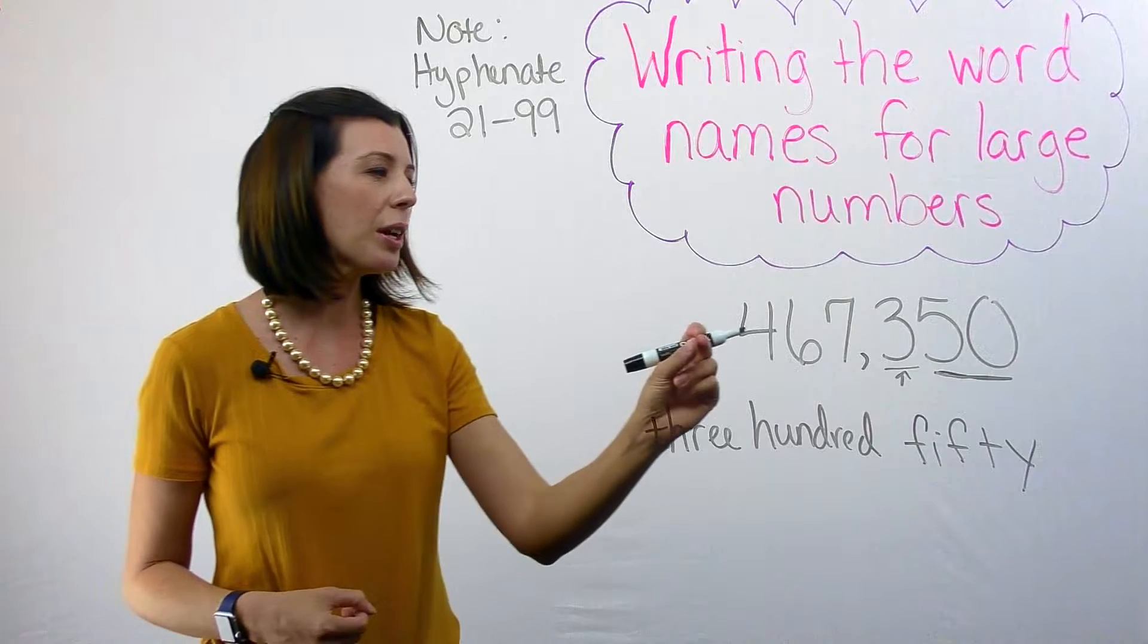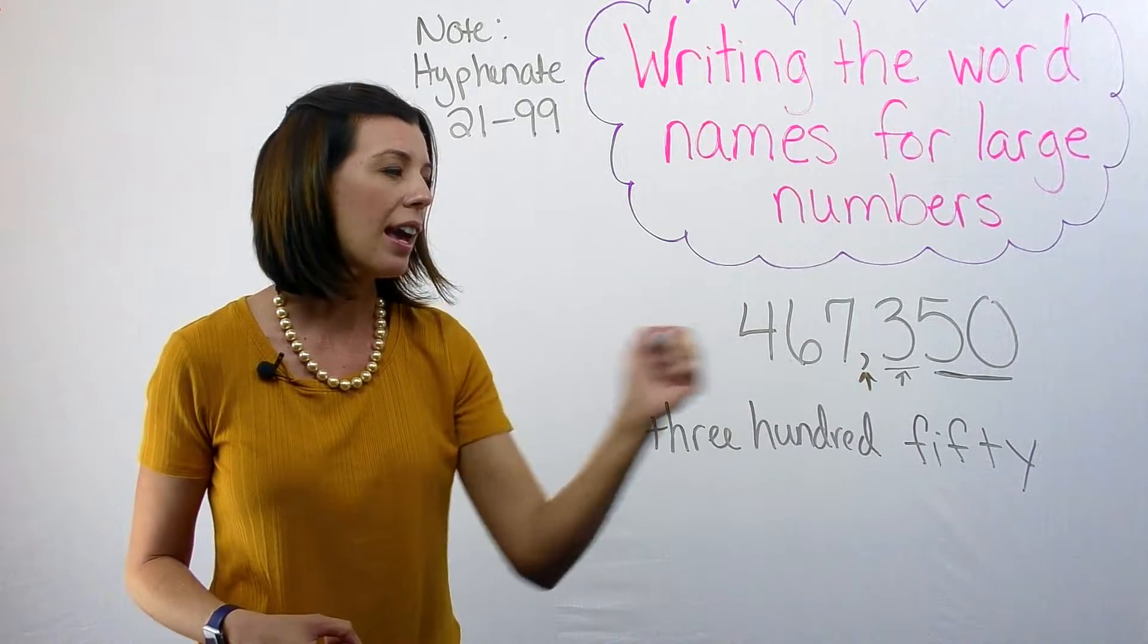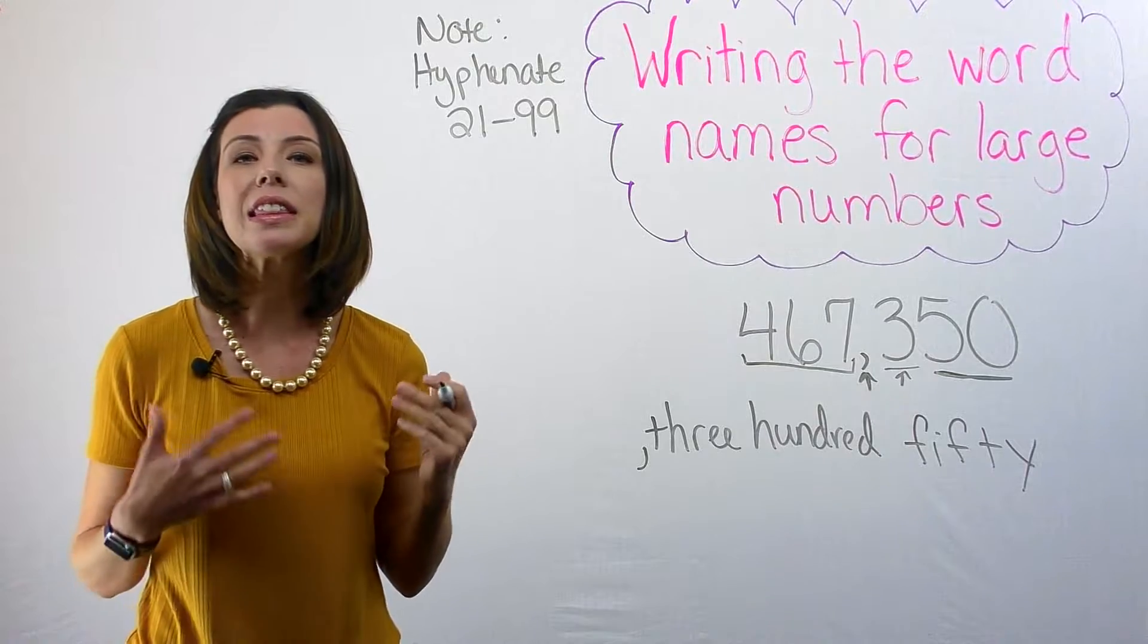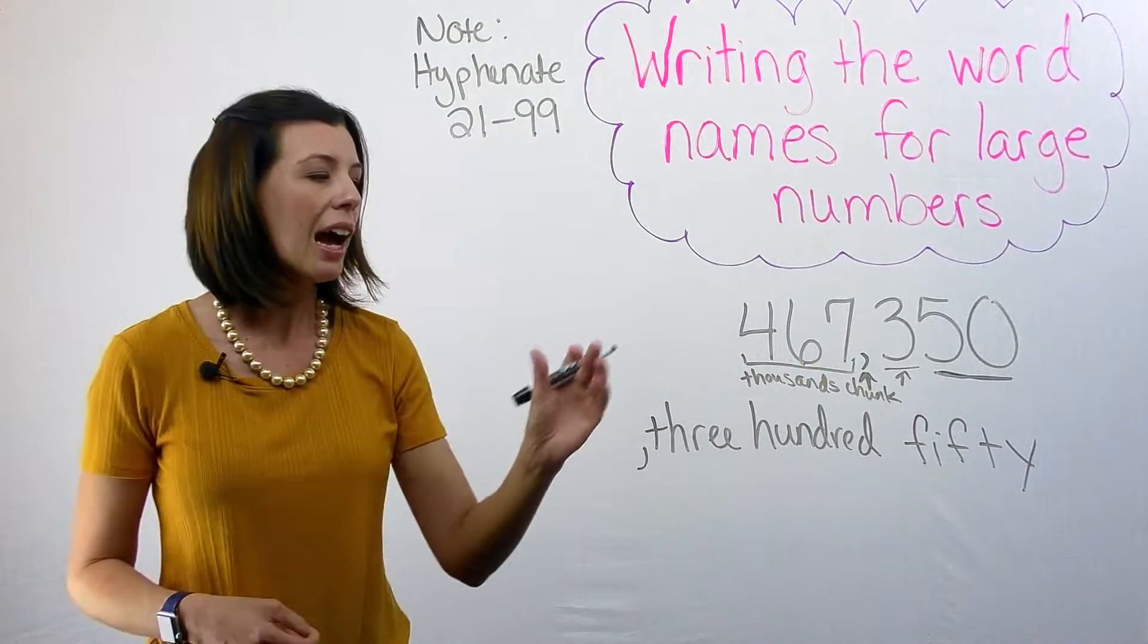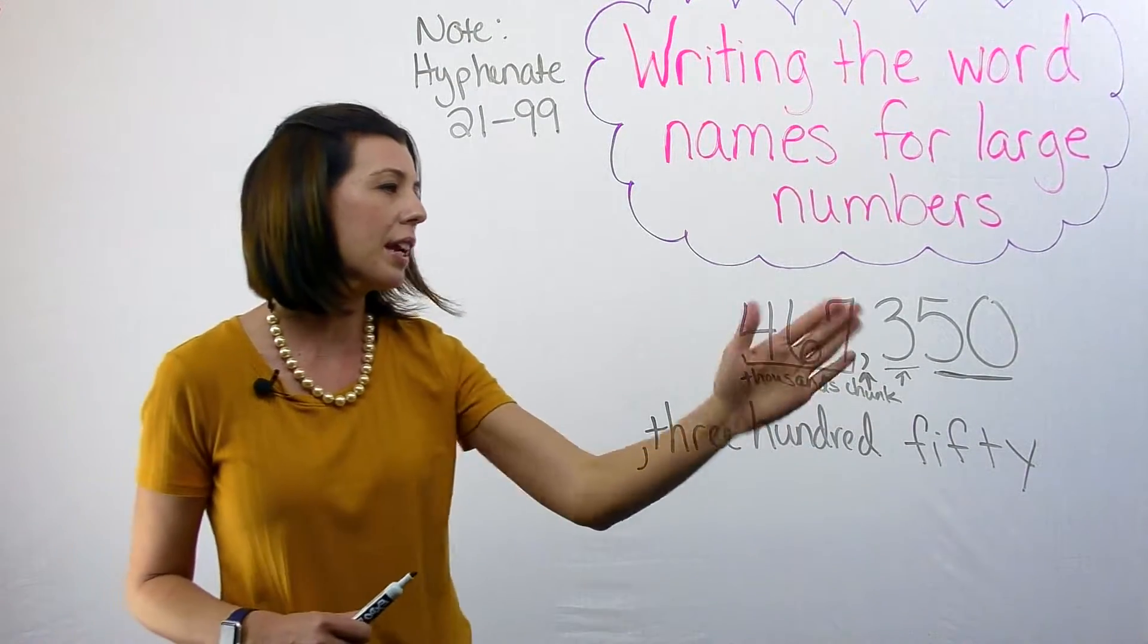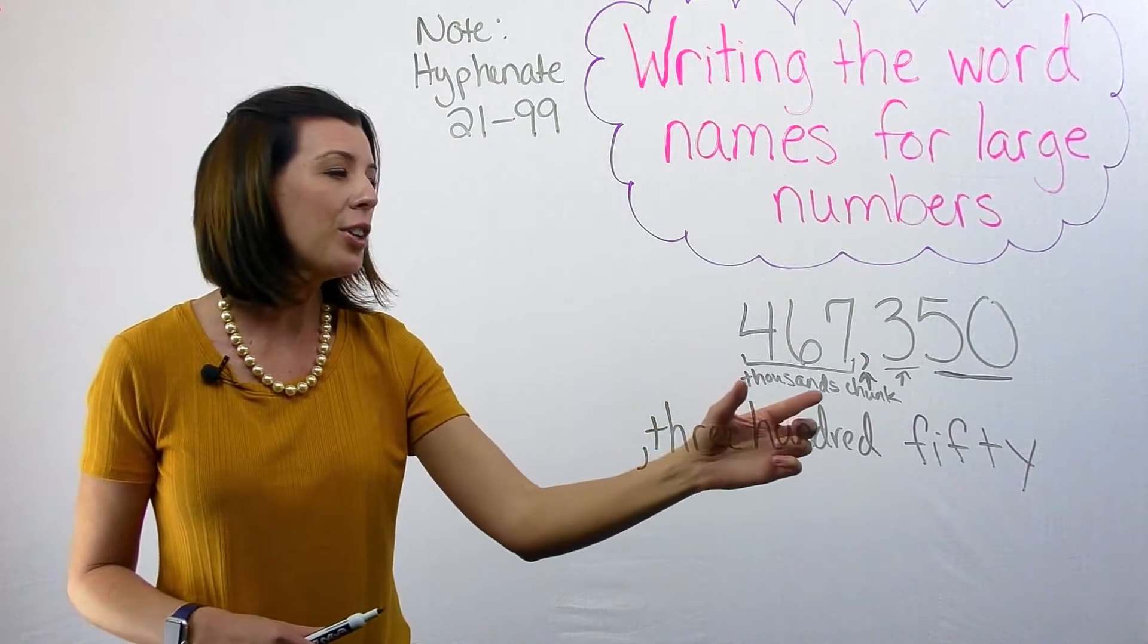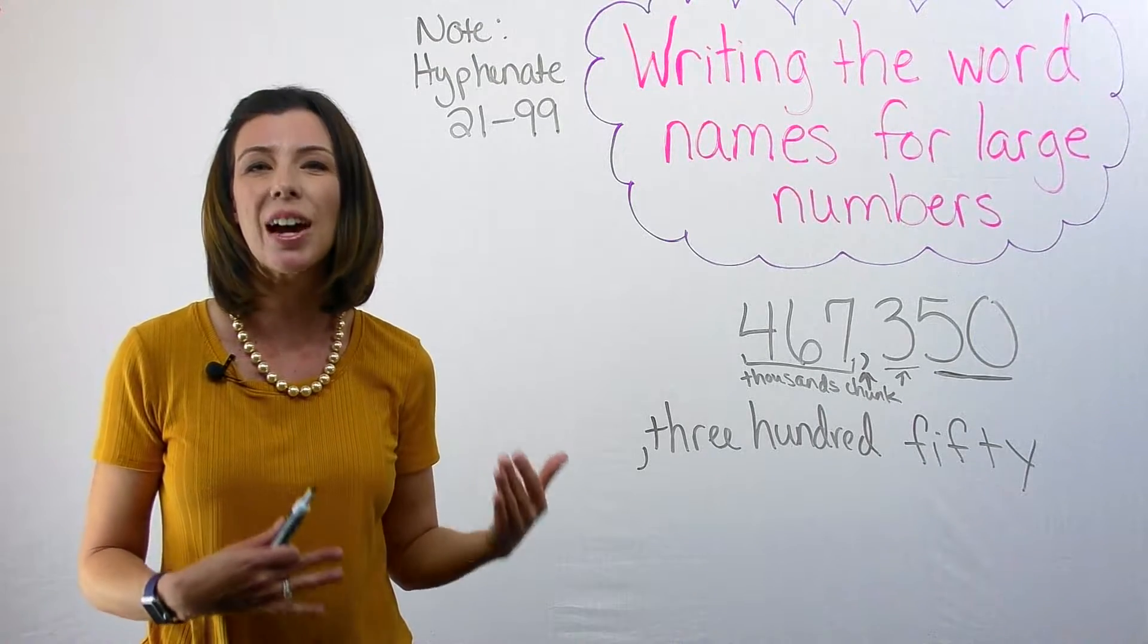Next, I need to look at my next chunk here. Now notice that I have a comma, I'm going to put that in my answer right now, so that I don't forget about it. This chunk right here is called the thousands chunk. I know that no matter what, when I read this number, so just like I read this number as 350. I'm going to read this number the same way, but I know that I'm going to have to put the word thousand after it, because it's the thousands chunk.